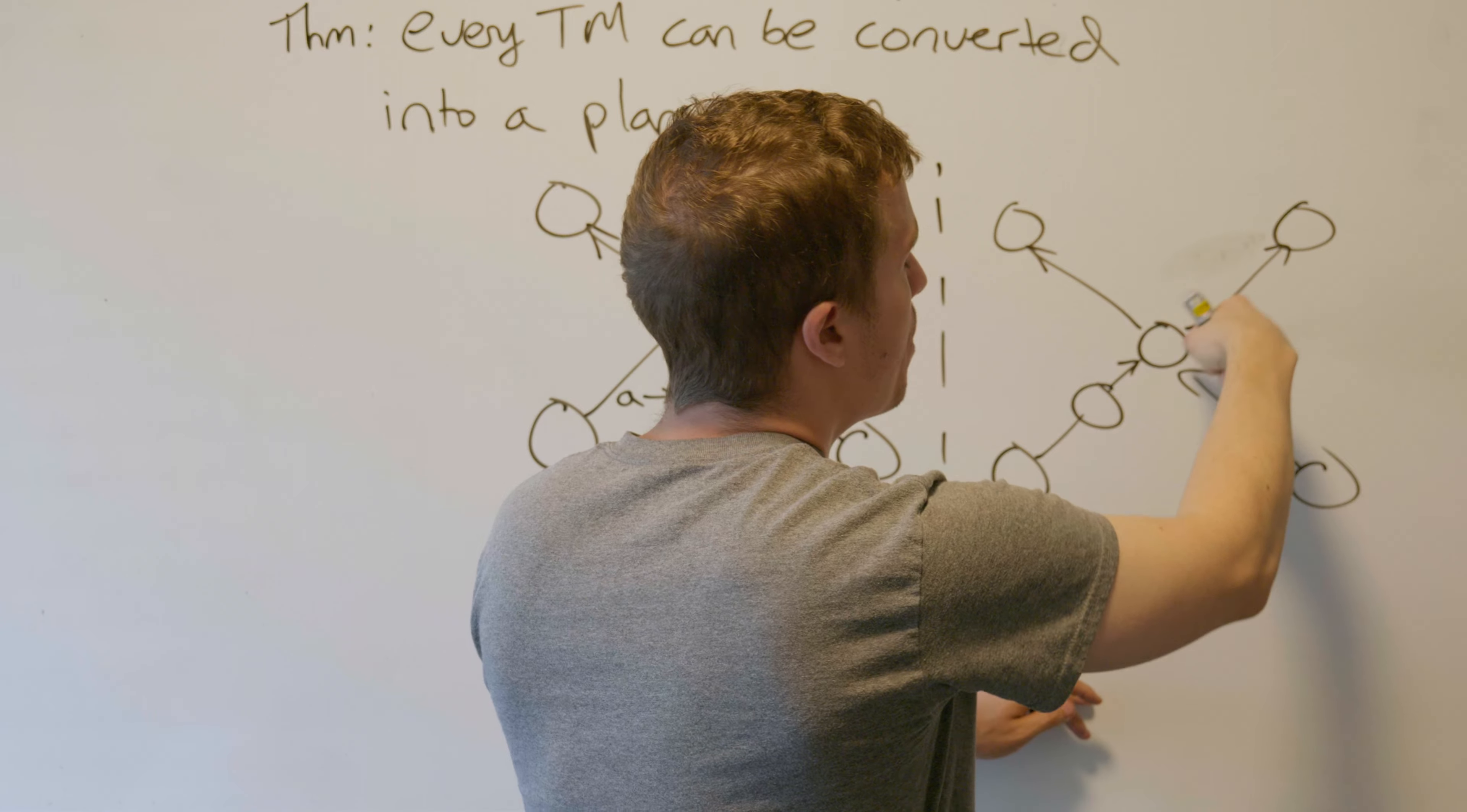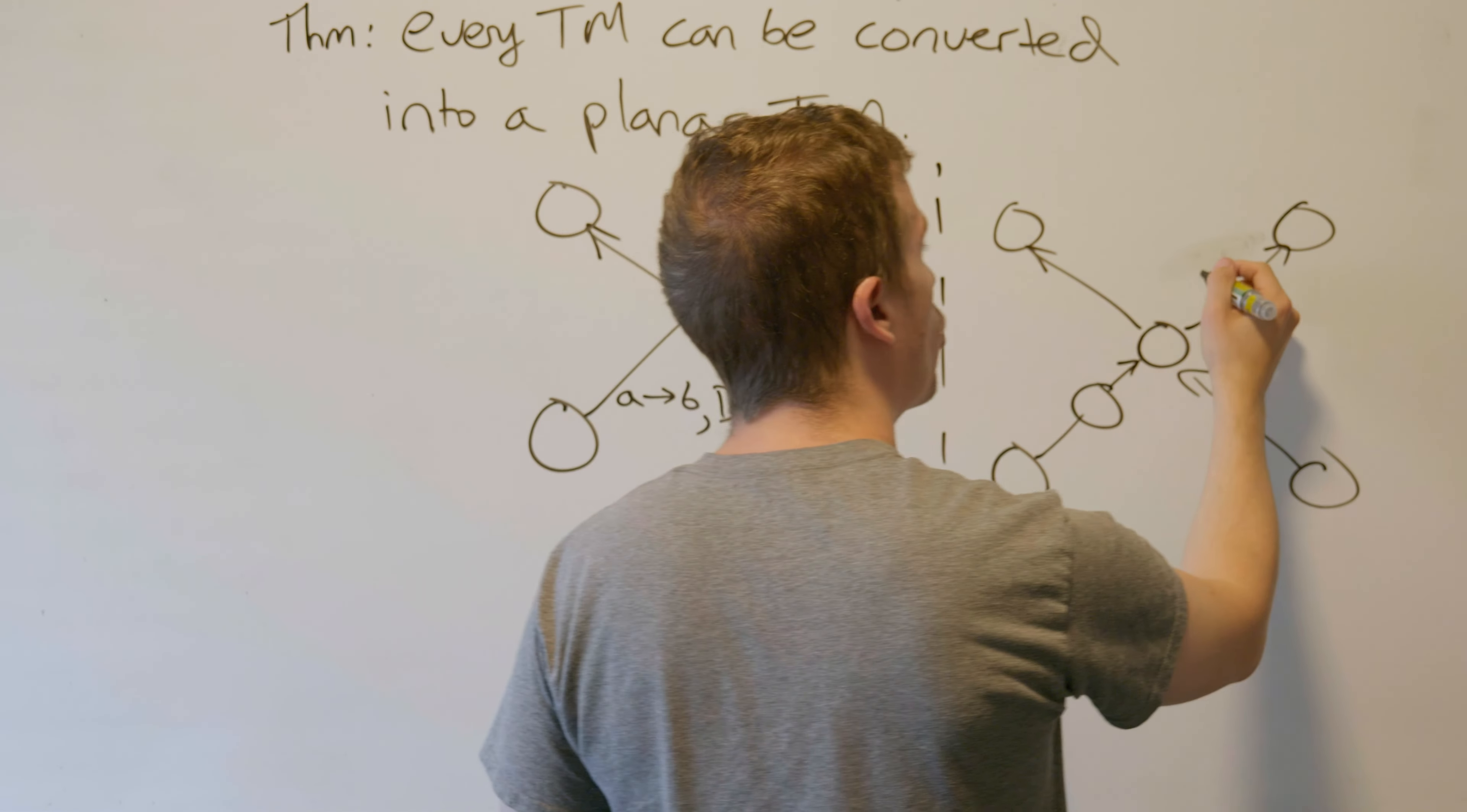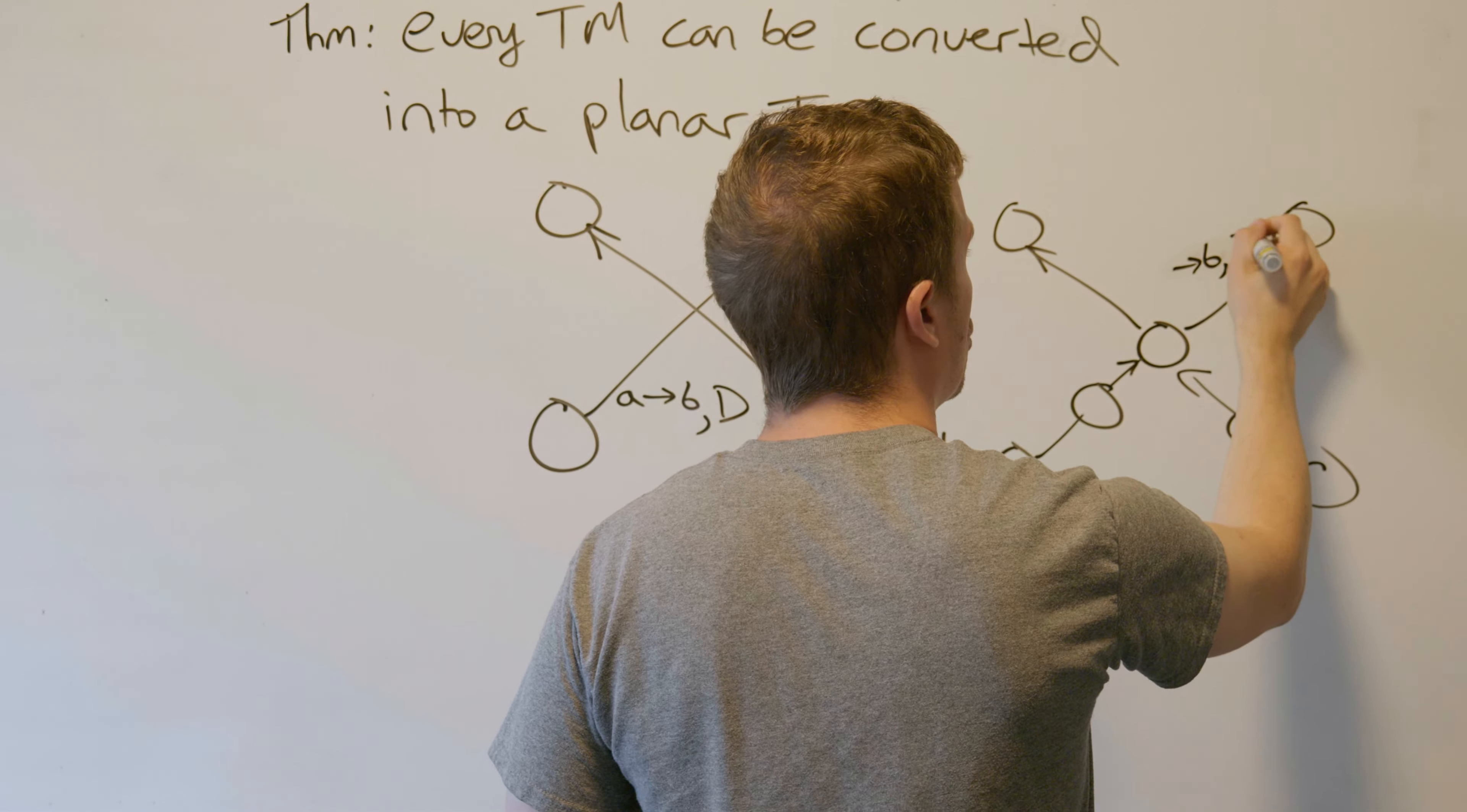Whatever happens up here, we need to change whatever cell that we're looking at to a B, no matter what. So we've got to change that thing to a B and then move in that corresponding direction D.